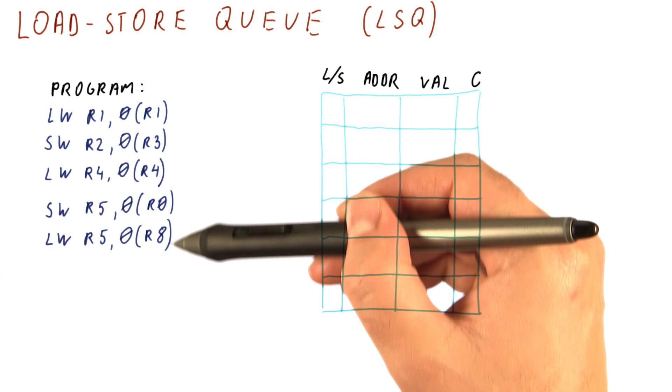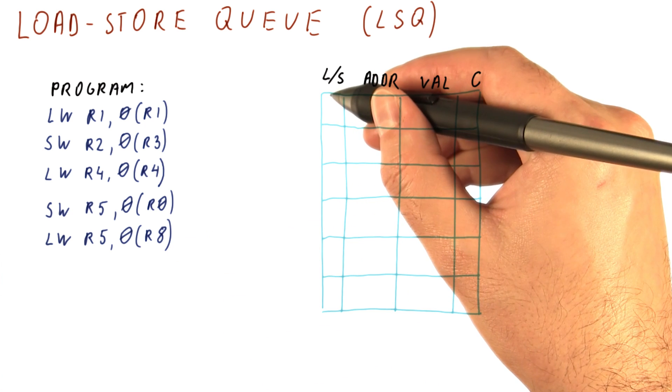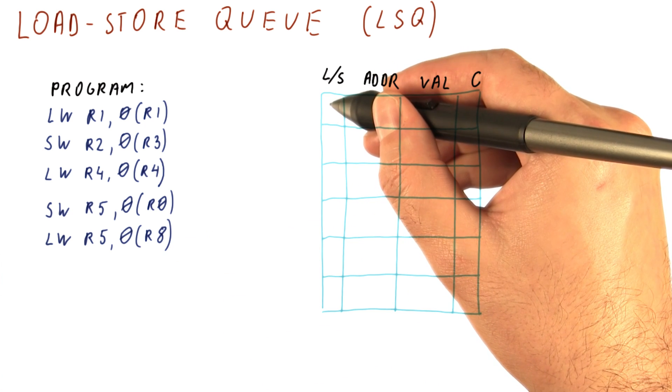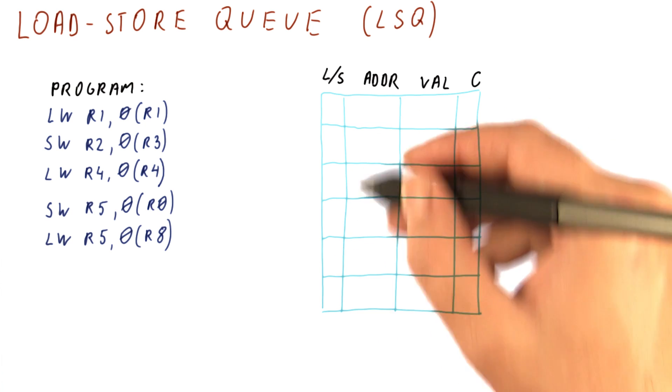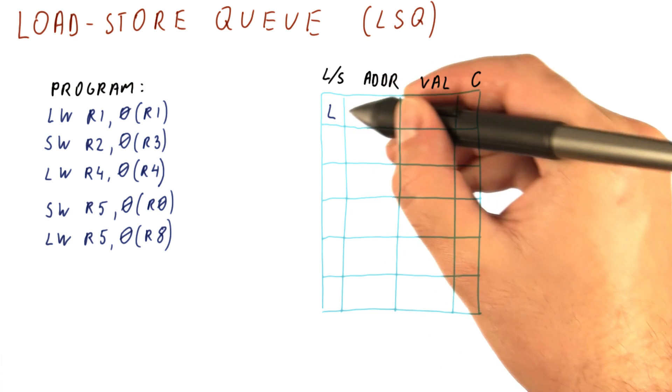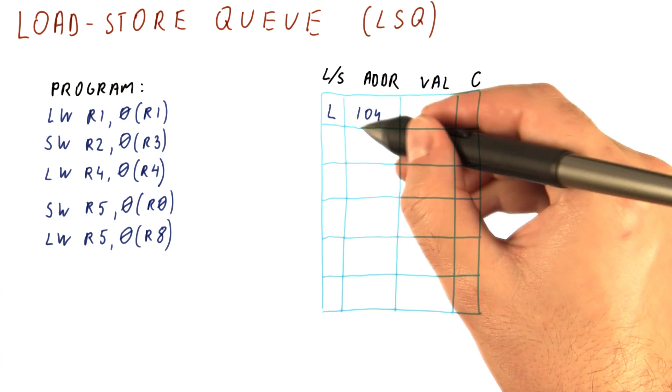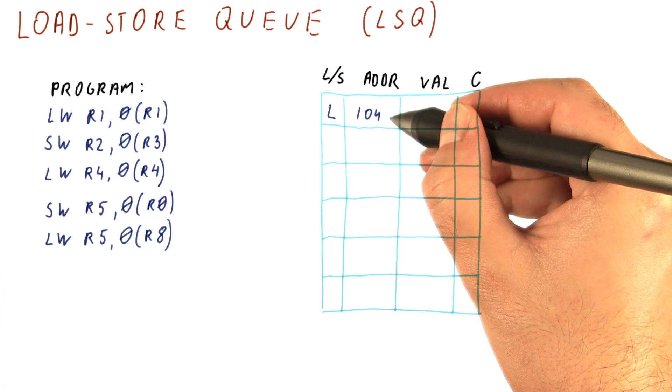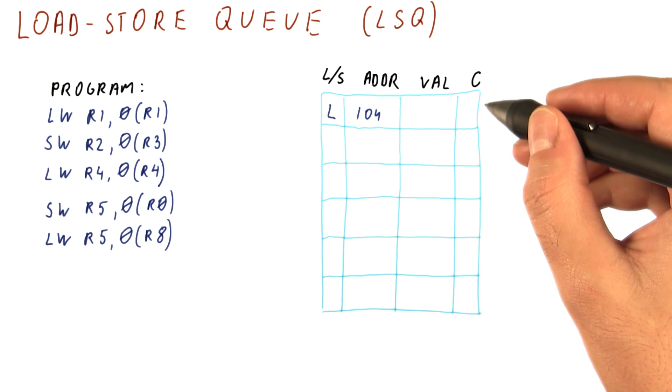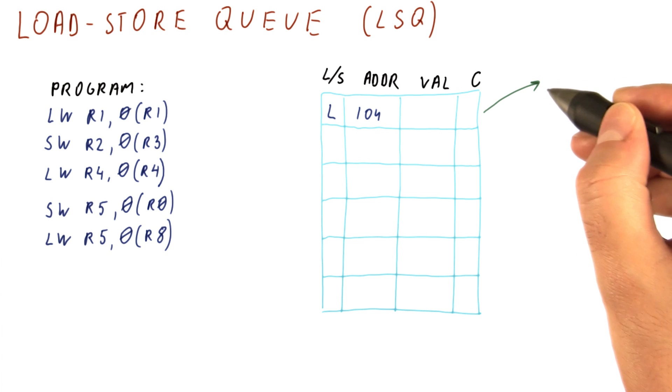Let's suppose we have this program and suppose that the load store queue is initially empty. As we said, things are going to be placed here in program order. So the first instruction here is going to be a load. Let's say that we quickly compute the address and it's 104. This load, because there are no previous stores, will go to memory.